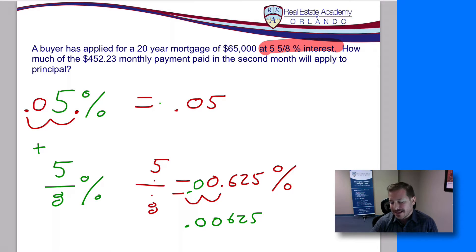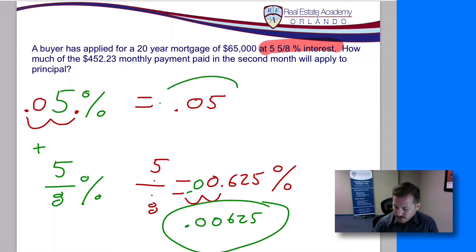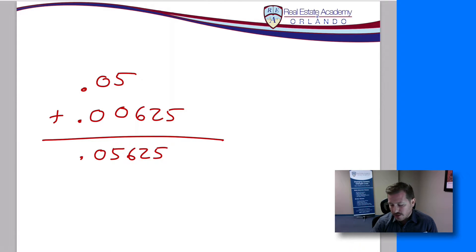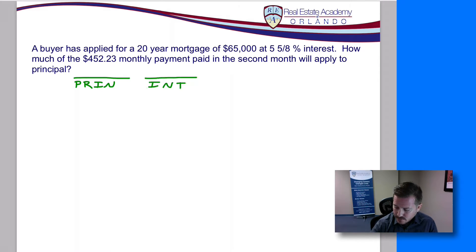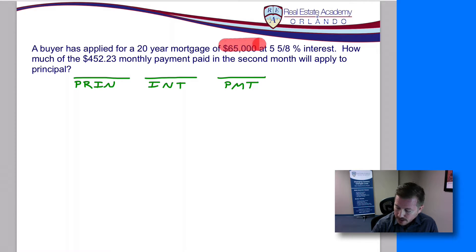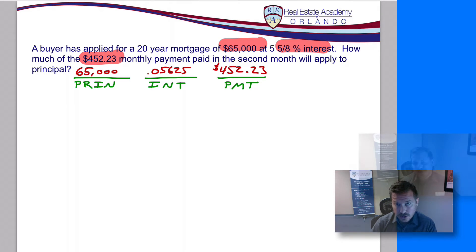Now we have the two pieces to add together. This is our five eighths percent converted to a decimal and our five percent converted to a decimal. So 0.05 plus 0.00625 equals 0.05625. This is our interest rate and we're going to use this to calculate our formula going forward. They gave us the principal balance of $65,000, the payment of $452.23, and the interest rate we converted ourselves: 0.05625.